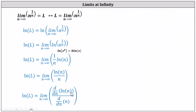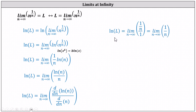The derivative of natural log n with respect to n is one divided by n. The derivative of n with respect to n is one. We now have natural log L equals the limit as n approaches infinity of one divided by n divided by one, or just the limit as n approaches infinity of one divided by n.